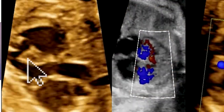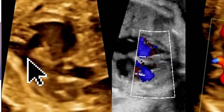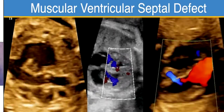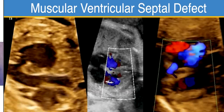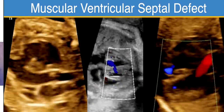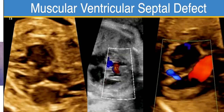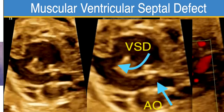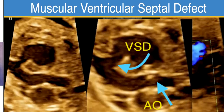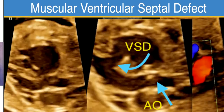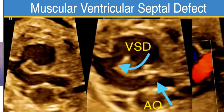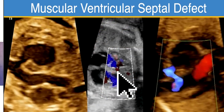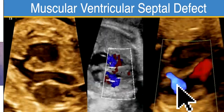Here are more examples. This one is quite large. When assessing size, I don't use absolute numbers — I compare the VSD to the aortic valve annulus. Here the VSD is greater than half the size of the aortic valve annulus, making it a significant, large muscular ventricular septal defect. This next one is much smaller.